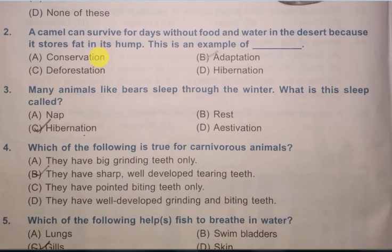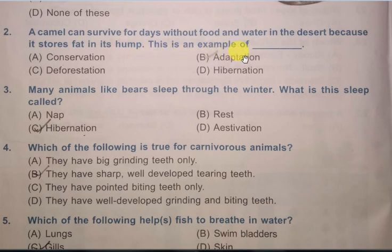Next question: A camel can survive for days without food and water in the desert because it stores fats in its hump. This is an example of what? Options are: conservation, adaptation, deforestation, hibernation. The correct answer is adaptation.